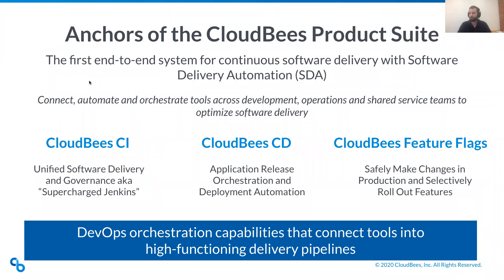A good place to start is focusing on the anchors of the CloudBees product suite — what makes up CloudBees SDA as we talk about modernization and monitoring your path to production. Primarily, we're going to be focusing on CloudBees CI, an enterprise-grade hardened version of Jenkins. It's really focused on scalability, running things with governance, and ensuring compliance — all the great components that large agencies require.